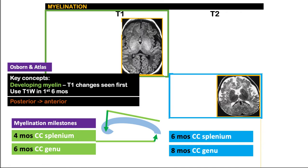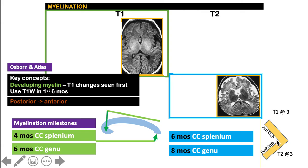Now, for the internal capsule, we have to remember two numbers: three and eleven. At birth, the posterior limb already has a T1 hyper-intense signal. Following our rule — T1 changes first, T2 later — the T2 changes come at three months. At three months, you also see T1 hyper-intense changes on the anterior limb, consistent with the posterior-to-anterior rule. The T2 changes in the anterior limb then come at eleven months, which corresponds to when the baby is starting to cruise and walk.